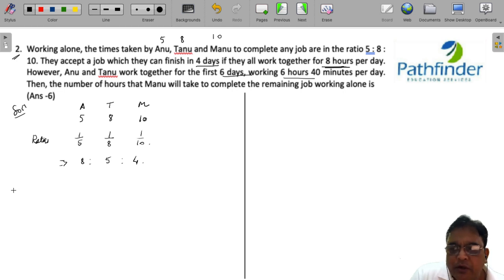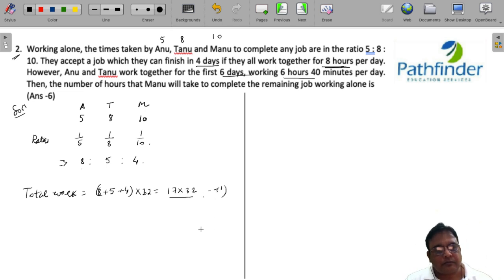Now what is your total work? Your total work is work done by the three of them in four days at the rate of 8 hours per day. So 8 plus 5 plus 4, this is rate. We know work is equal to rate into time, so the time is 4 days and 8 hours per day, so 32 hours in all. So into 32, which means the total work can be represented as 17 multiplied by 32.